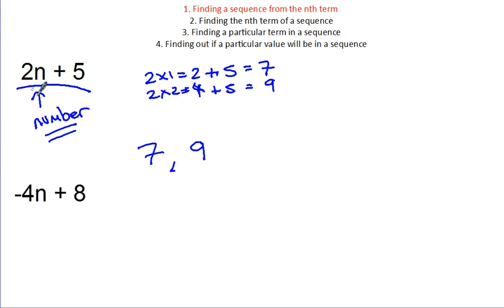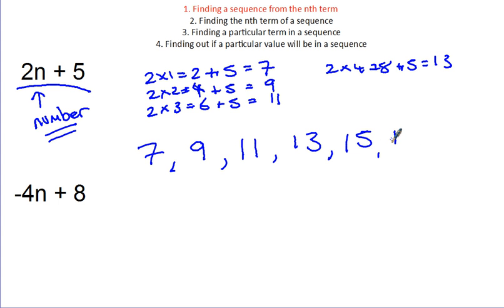To find the 3rd term, I'm going to replace the n with a 3. So, it's 2 times 3, which we know is 6. Again, add on the 5, gives me a value of 11. Now, you might see that there's a pattern emerging, that it's going up in 2s. Let's just check for the 4th term. So, 2 times 4 is 8. Add on the 5, gives me 13. So, the sequence will continue with adding on 2s each time to give you the next term in the sequence.